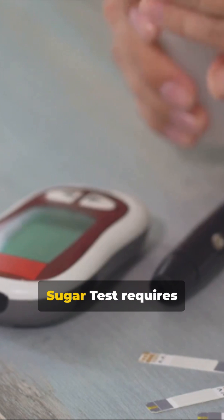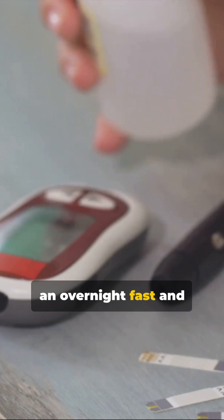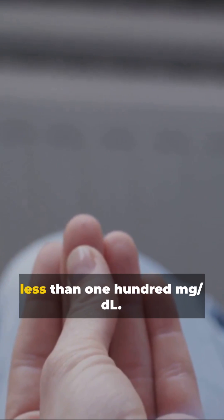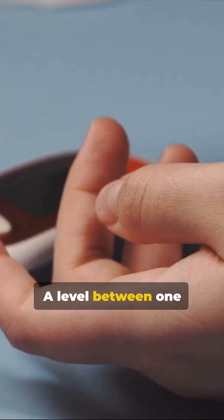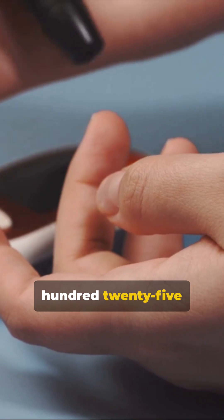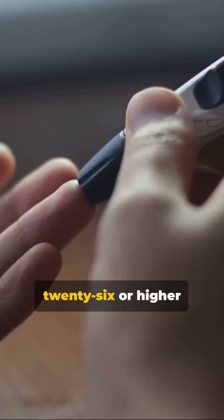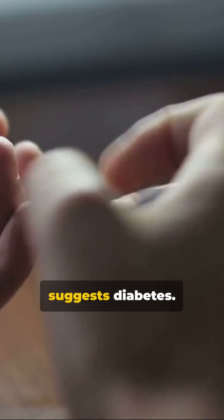The fasting blood sugar test requires an overnight fast and a blood sample. Normal levels are less than 100 mg/dL. A level between 100 to 125 suggests pre-diabetes while 126 or higher suggests diabetes.